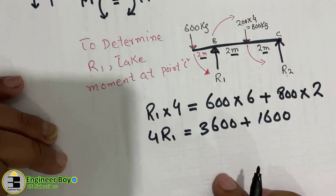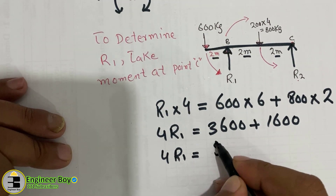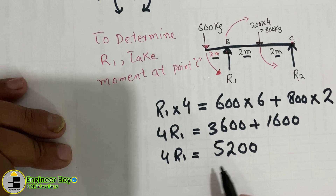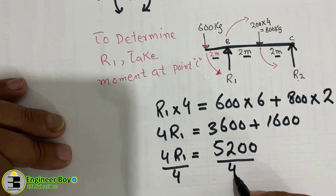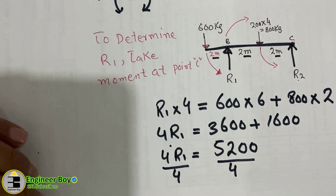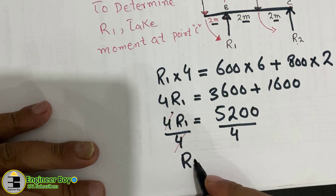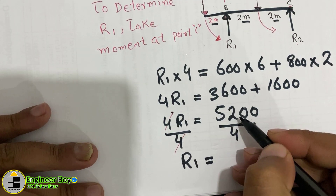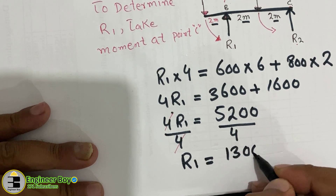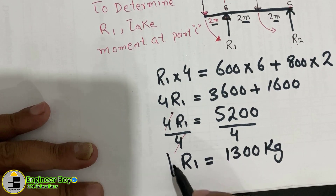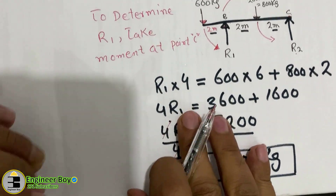Simplifying: 4 R1 = 5200. Dividing both sides by 4: R1 = 5200 ÷ 4 = 1300 kg. So R1 equals 1300 kg.